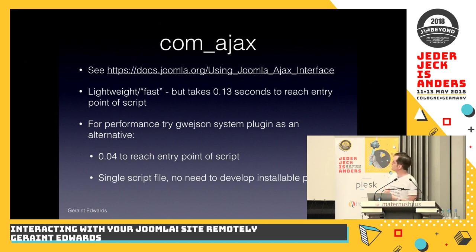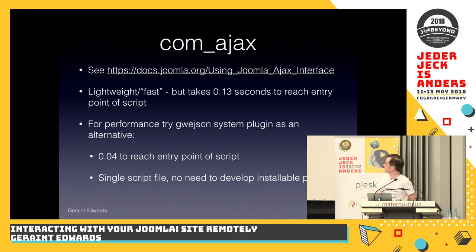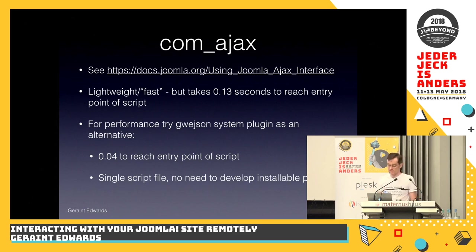It's lightweight and fairly fast, but on my development server it takes 0.13 seconds just to reach the entry point of the script. So if you're doing type-ahead or a lot of interaction with the site, that 0.13 seconds can be a drag on performance. Because of that, we actually wrote our own system plugin as an alternative in jEvents — it's completely free. Our plugin gets triggered a lot earlier than the ComAjax component and only takes 0.04 seconds, so it's basically three to four times faster than ComAjax as an interface. And you don't need an installable plugin or module; there's just a particular format for the file.